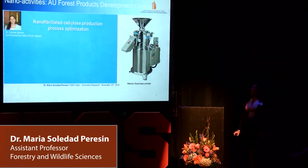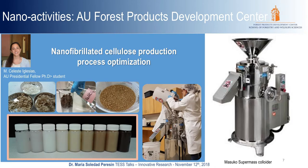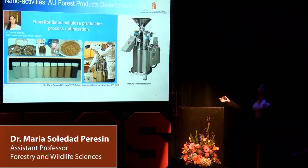At the Forest Products Development Center where I work at Auburn University — and you are very welcome to come and see — we have a Masuko Supermass, which despite sounding very fancy is a grinder, a piece of equipment where we have the capability to make our own nanocellulose. Our student Celeste just received a presidential fellowship to do her PhD with us, focused on the optimization and processing of different raw materials, the compositions of the starting material, and what properties we impart to the nanocellulose to find the best applications.